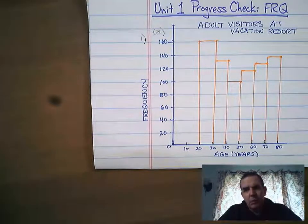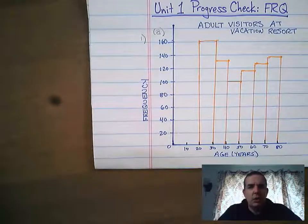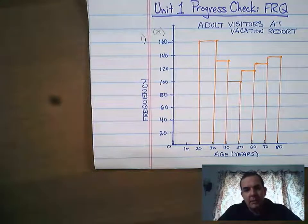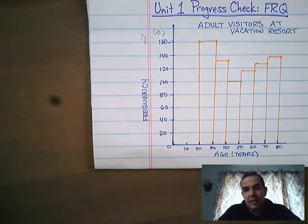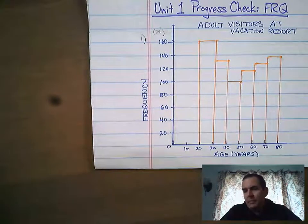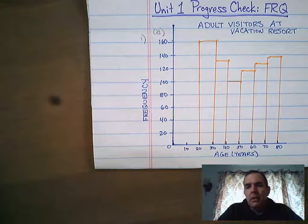This is more a question of you understanding what a normal distribution looks like. The bare minimum for having something be a normal distribution is it needs to be roughly symmetric, and it needs to be mound-shaped — unimodal with a high peak in the middle.